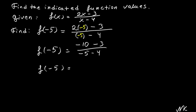Same sign, we look for the sum. So negative 10 minus 3 gives us negative 13. In the denominator, negative 5 minus 4 — same sign, we look for the sum — gives us negative 9. So f of negative 5 is equal to negative 13 out of negative 9. Negative divided by negative gives a positive, so f of negative 5 equals positive 13 out of 9.